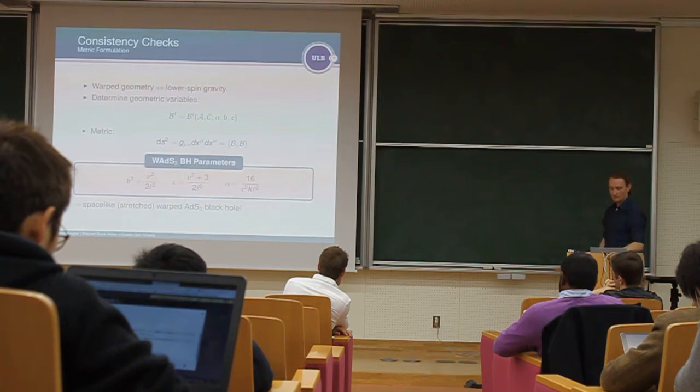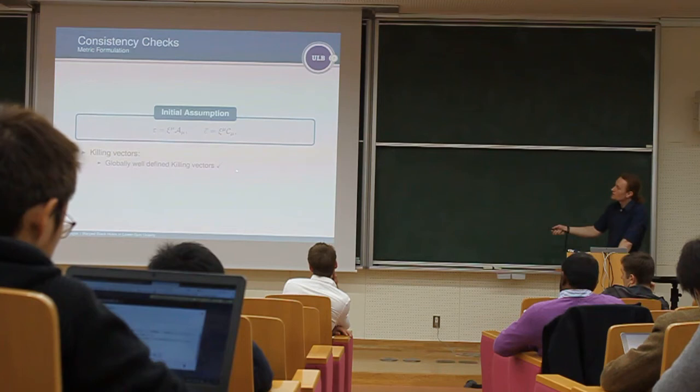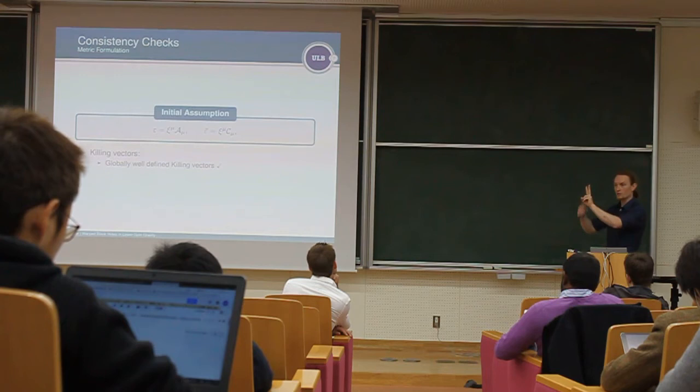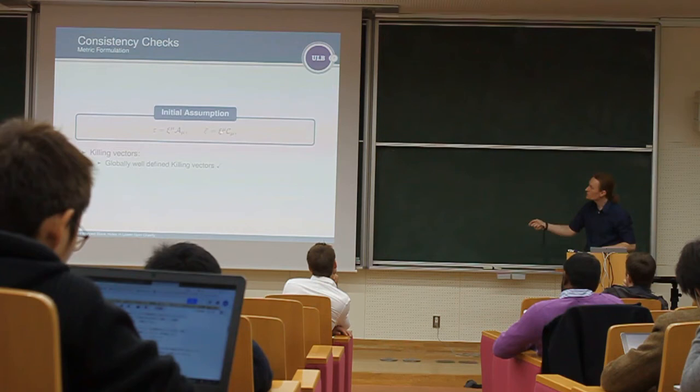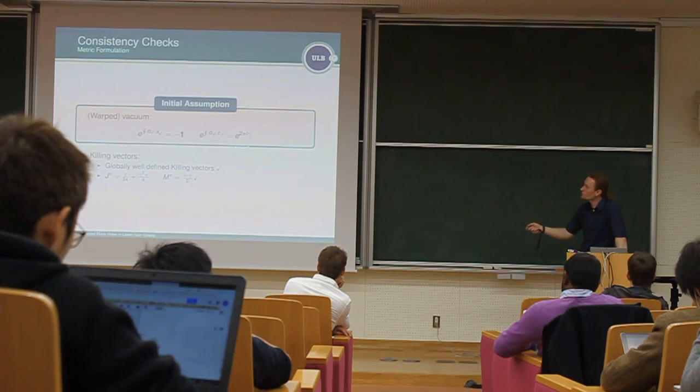And if you choose certain values for B, C, and alpha, that I showed you here, where this nu here is the warping parameter, and L is the AdS radius, you will find exactly the space-like stretched warped AdS. Like exactly. So that's a very nice thing, very intriguing. And once you have this, the rest is basically computed. So in order to check our previous assumptions, then you can check two of the three assumptions by computing the killing vectors. That is, you find four killing vectors. Two of them are globally well defined, which are time translations and phi translations.